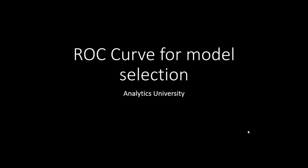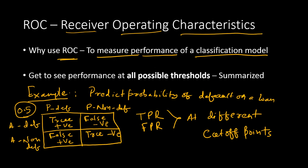In this video, I will talk about how to use the ROC curve for model selection in classification in a modeling framework. ROC stands for Receiver Operating Characteristics and is a popular metric to select a classification model out of a number of classification models.